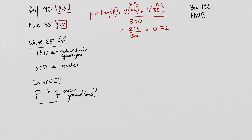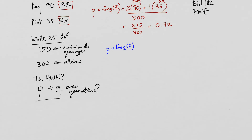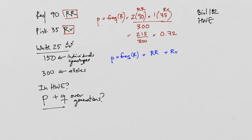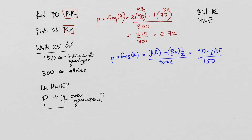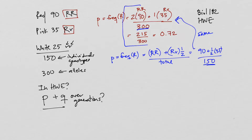There is another way to do this math. P equals the frequency of big R, taking into account the big R, big R individuals and the heterozygous individuals. For every individual that's homozygous dominant, I count half of a heterozygous individual out of the total population — so 90 plus one half of 35, out of 150 individuals. This gives exactly the same result. We're just dividing by the number of individuals versus the number of alleles.